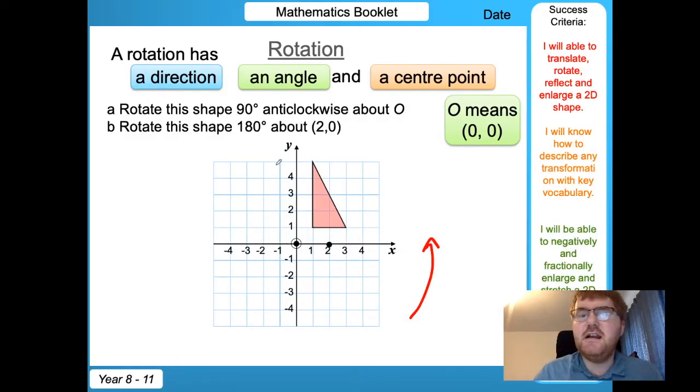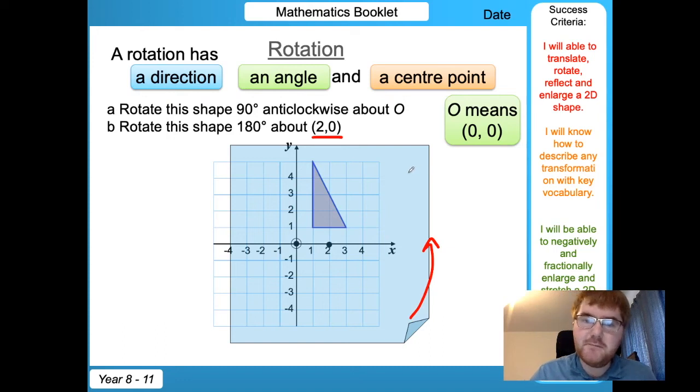Let me do the second question here. So we're rotating this shape 180 degrees. Now it doesn't matter which direction we go, because we can go anticlockwise or clockwise, we get to the same point. Notice we're now rotating around (2,0), so when we put our tracing paper on it and we draw around the shape,